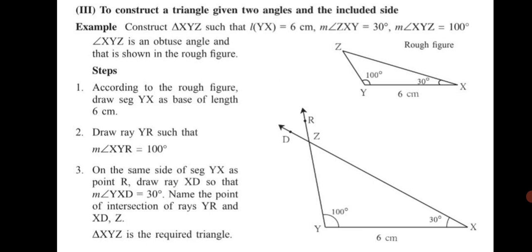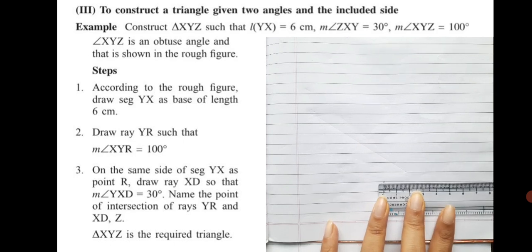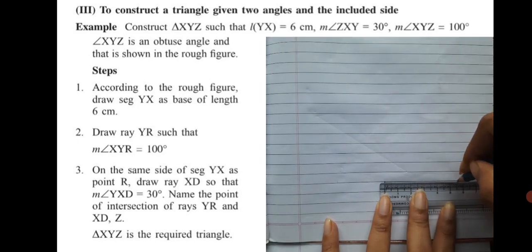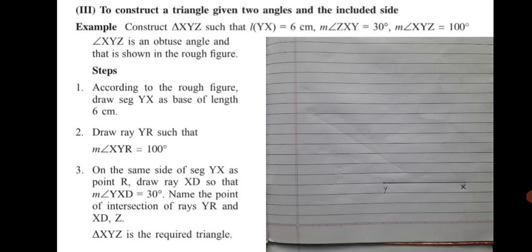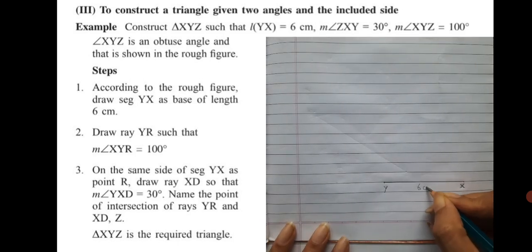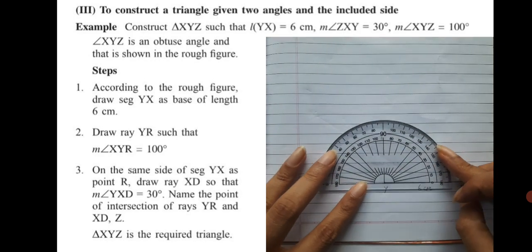When we start a construction, we get an idea as to which segments or points will be located where. We see YX as a base, so we always start constructing a triangle with the base first. First, take point Y and extend it to 6 centimeter using a scale — mark a point at exactly 6 centimeter. Keep your scale steady and straight and mark the 6 centimeter line. This forms segment YX. Write its measurement of 6 centimeter — draw seg YX as base of length 6 centimeter.